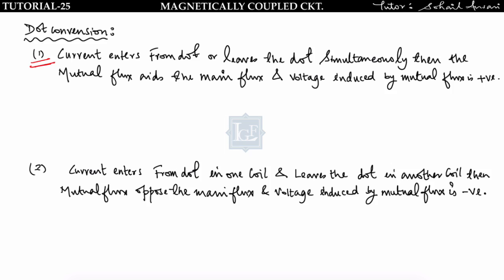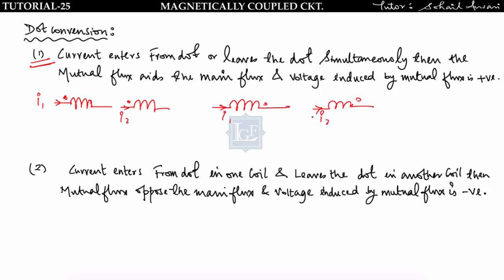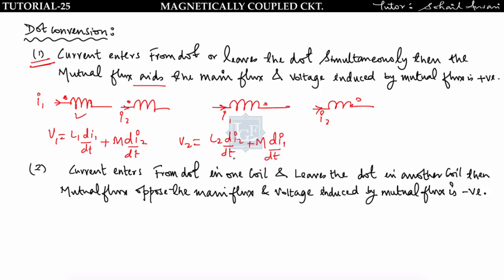Convention one is the combination of cases one and two. Suppose two inductors: if current enters from the dot in both coils, or if current leaves the dot in both coils, the mutual flux aids the main flux and the voltage induced by mutual flux is positive. So V1 = L1 di1/dt + M di2/dt and V2 = L2 di2/dt + M di1/dt.